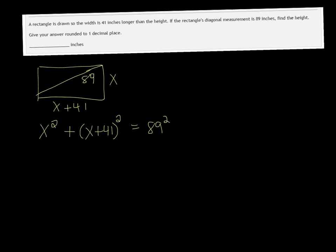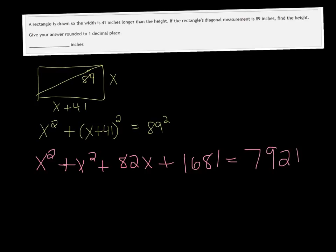So, if we work this out, we get x squared plus x squared, let's see, 41 doubled is 82, so it would be 82x, and then 41 squared is 1681. And then we have to do 89 squared, which is 7921.